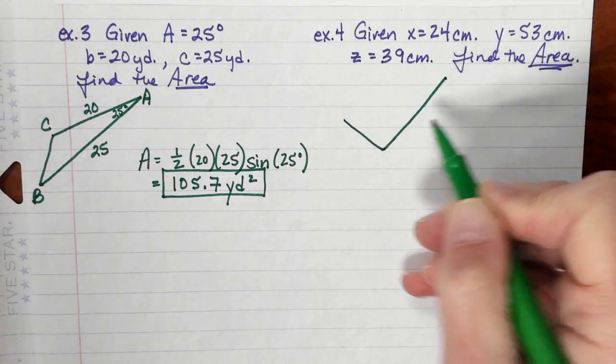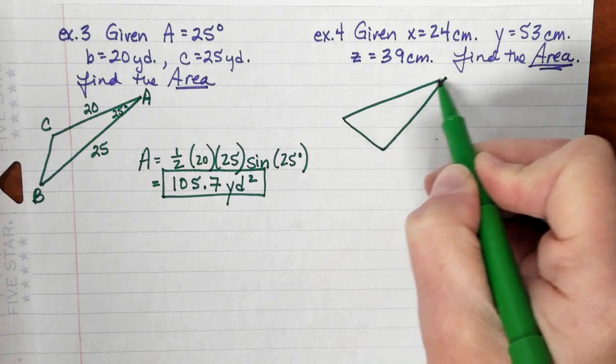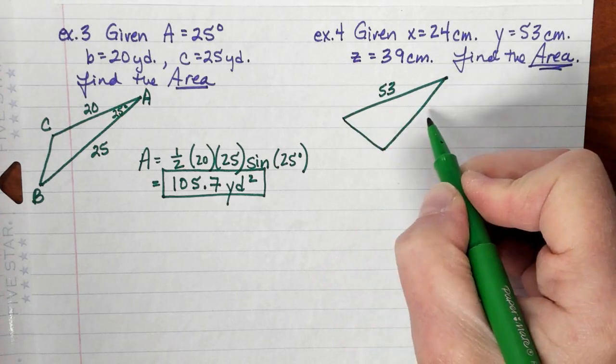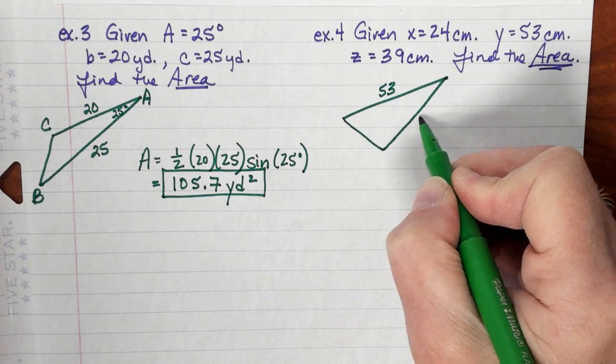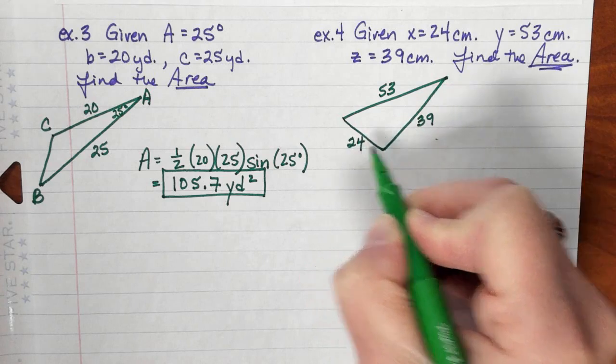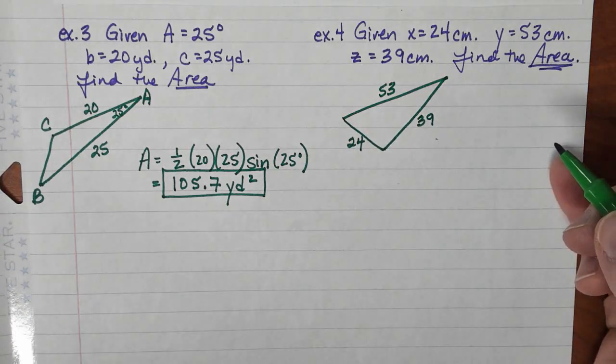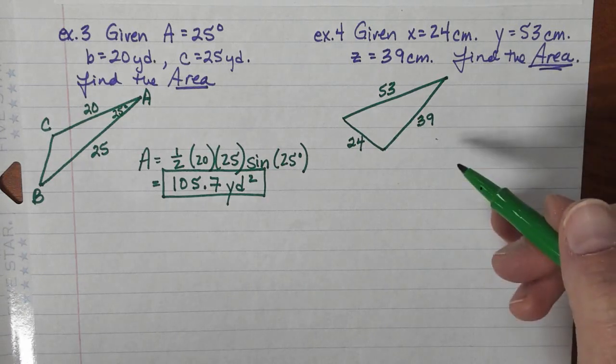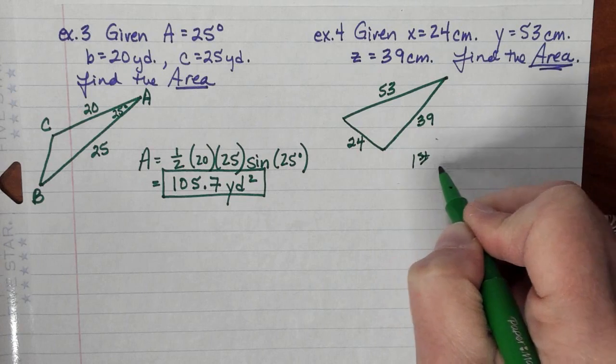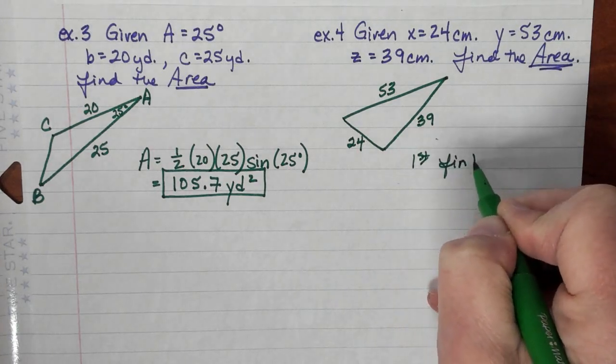That kind of looks like a right angle, but didn't mean for it to be. This would be 53, this would be the next one at 39, and 24. I want to know the area within there. So the first thing to do is I need to find the value S.